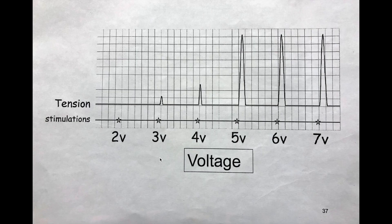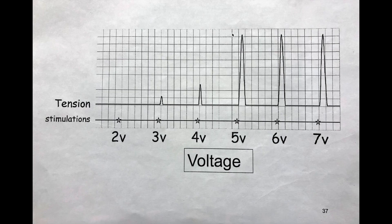To summarize: when we zap a muscle and nothing happens, that's sub-threshold. Wherever we have the first tension formed causing a muscle contraction, that voltage is threshold — on this example it's 3 volts, but don't memorize numbers, memorize trends. The reason tension gets bigger is motor unit summation, or recruitment of more motor units. The first highest peak you see is the maximal stimulus, meaning all motor units have been recruited — it doesn't matter how many more volts we give it, that is the strongest that muscle will contract.